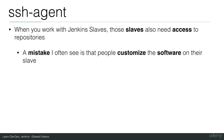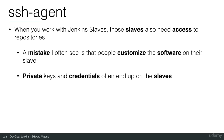A mistake I often see is that people customize the software on their slave - like they install custom software, custom node versions rather than using the plugin or Docker images. They also use private keys and credentials, and those often end up on the slaves. You need credentials and private keys to log in to git, any API, or to use Slack. Either you use credentials and they are nicely distributed, or you put your private keys in the credentials and specify a few lines in your Jenkins file, but you can never just copy those private keys and credentials as plain files to your slaves because that is not best practice.